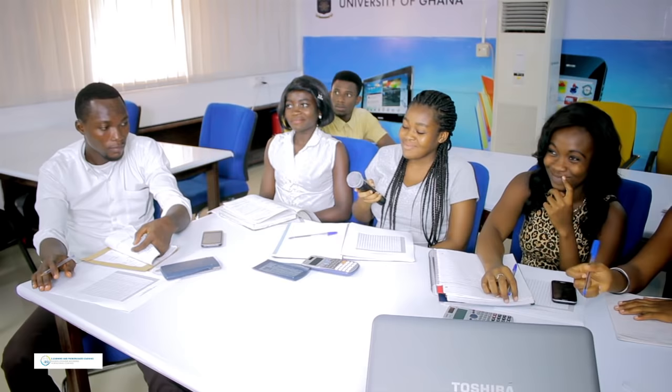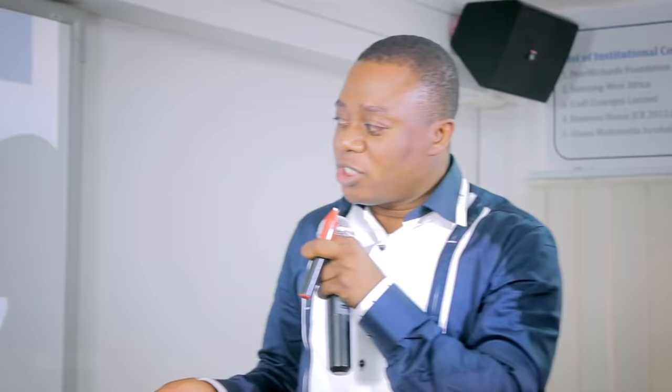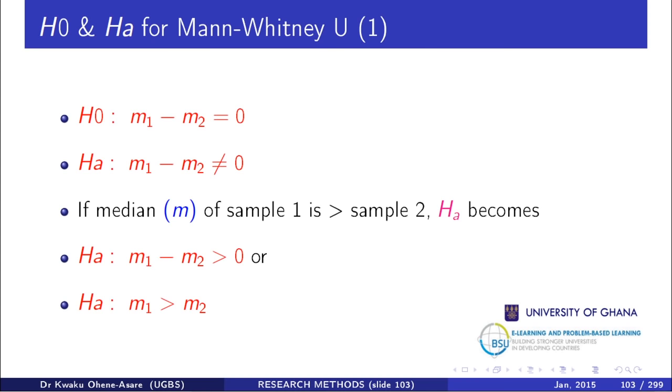The null hypothesis is M1 less than or equal to M2, and the alternative is M1 greater than M2. The alternative can also be written as M1 minus M2 is positive. The null is M1 minus M2 less than or equal to zero — these two formulations are equivalent.